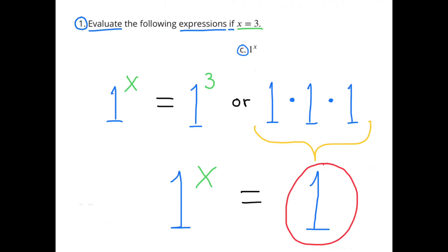Part c: 1 to the power of x. In this case, 1 to the power of 3, or 1 times 1 times 1. When the value of x is 3, 1 to the power of x equals 1.